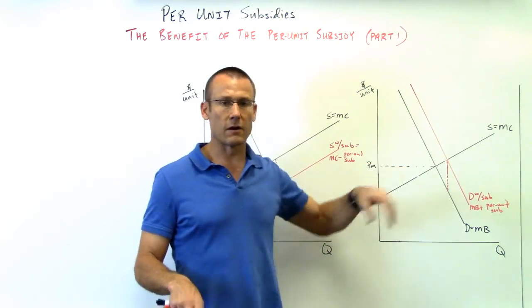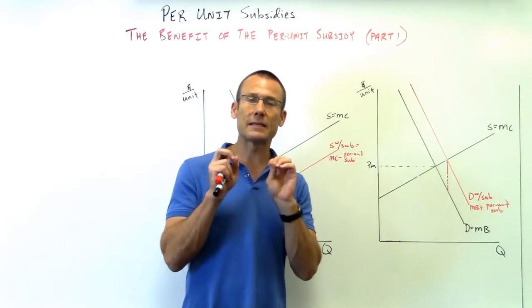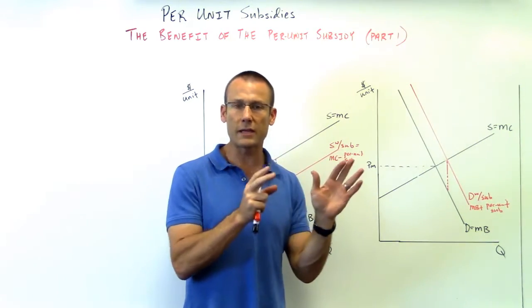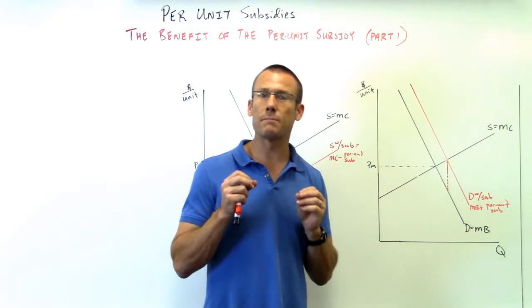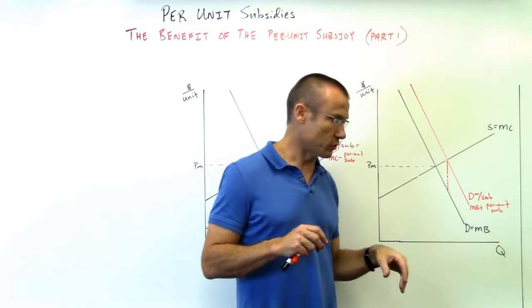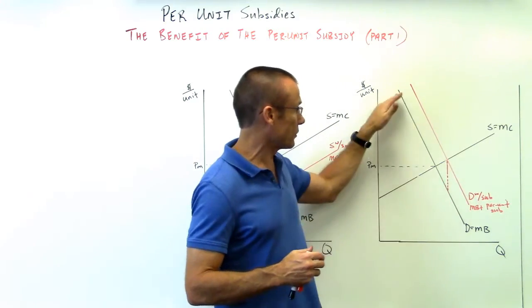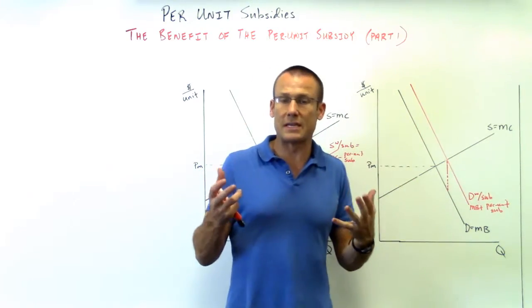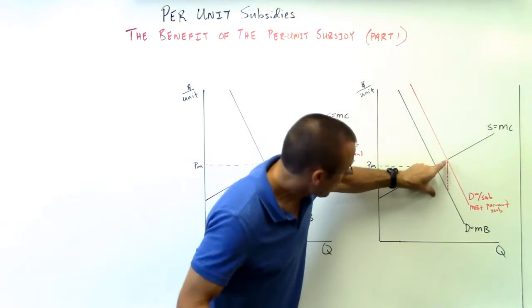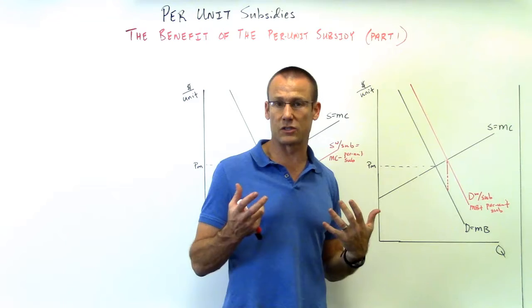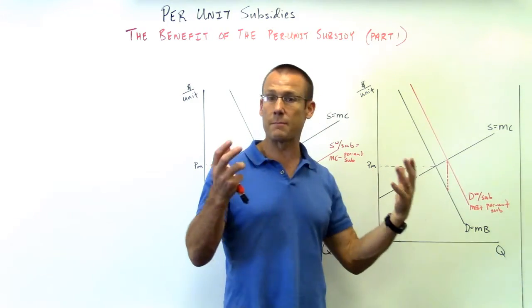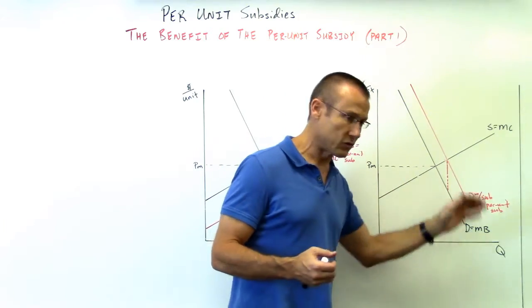Over here, the government is physically giving the per unit subsidy to the consumer. Since they're writing it to the consumer, demand shifts right — quantity demanded is increasing at every price point. What's happening to marginal benefit? Well, they're not just getting the good anymore. The old line was them just getting the good; now they're getting the good plus a check. That vertical distance is how much the check is — the per unit subsidy — so marginal benefit shifted up by the amount of the per unit subsidy, and demand shifted right.